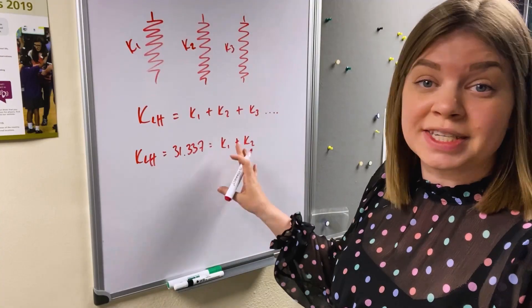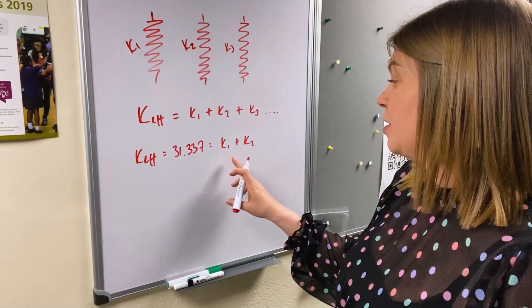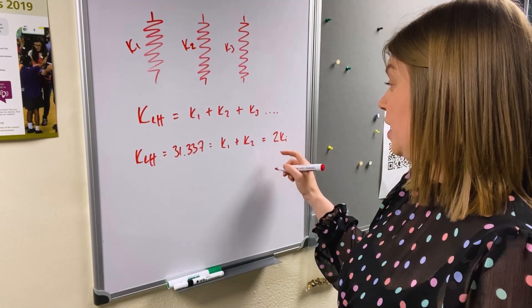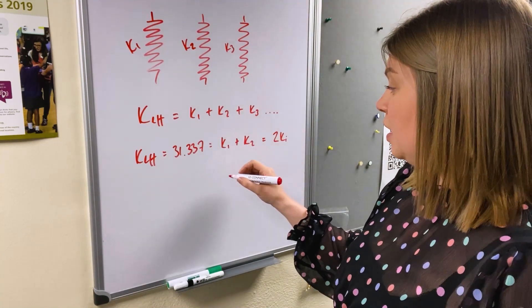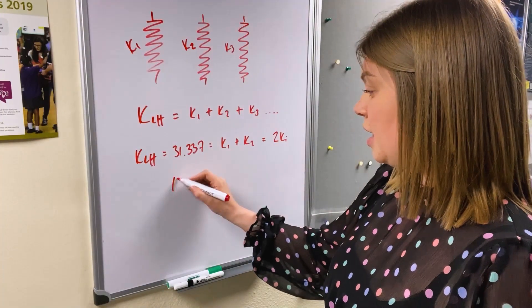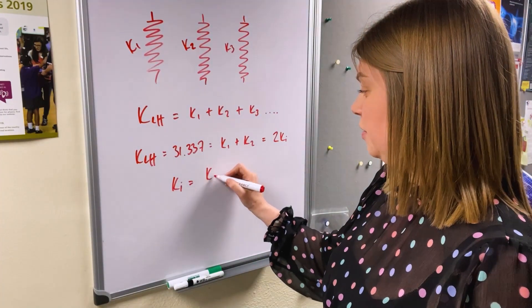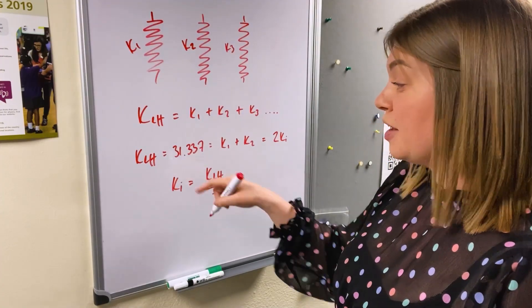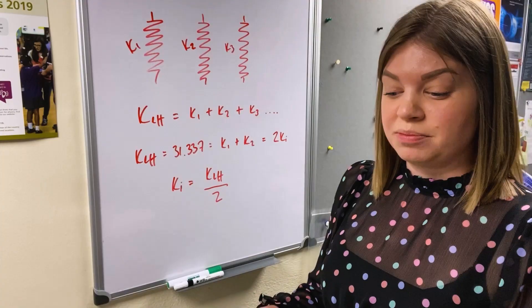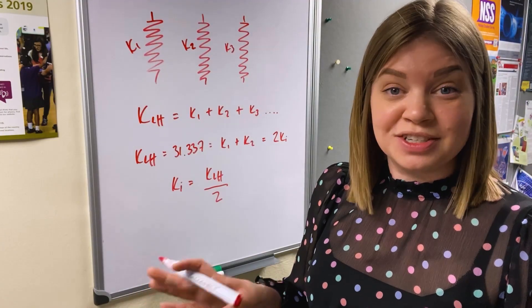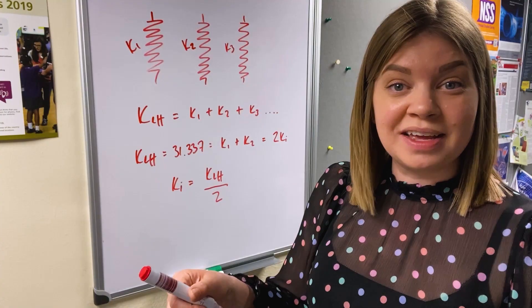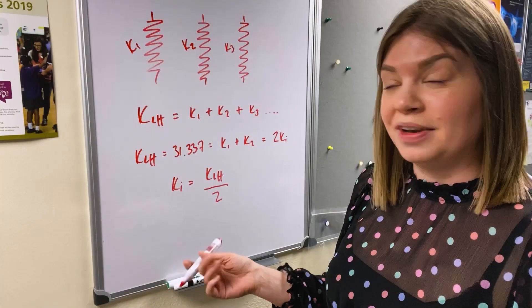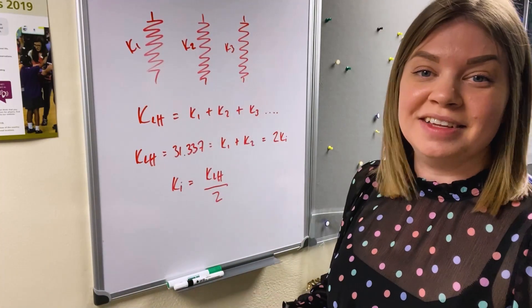Now we are using two springs which are exactly the same, they've got exactly the same spring constant so we can simplify that to two lots of Ki where i is either one or two. Then to get Ki on its own we just have to do k effective all over two, so divide that number by two to get 15.669, and that is super close to the value that we got for the spring in the last video. It's like a couple of hundredths off so we have proven that this relationship is accurate.